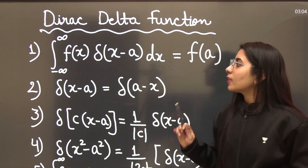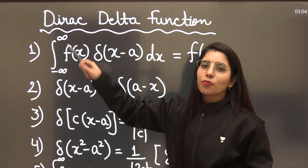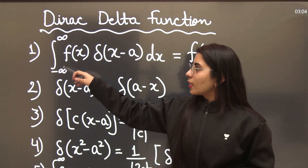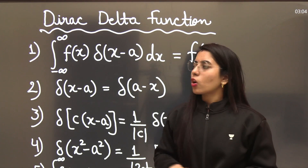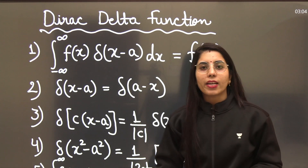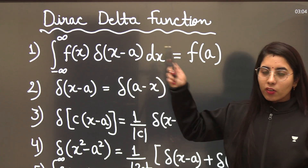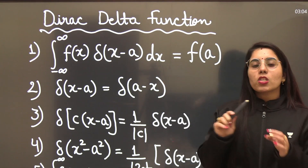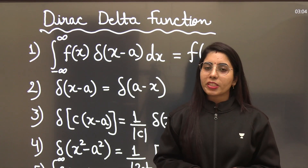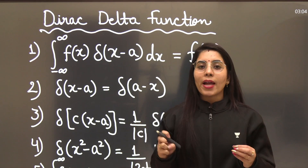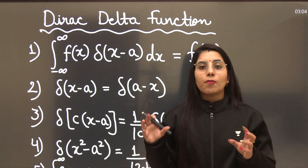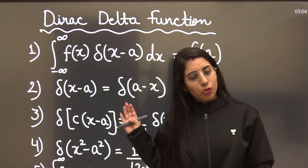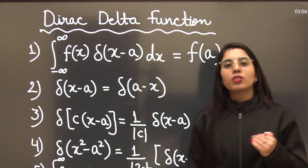But in case the range is not from minus infinity to plus infinity — if it is something like 1 to 3, 3 to 7, or minus 2 to 5 — and the value of x you get is not lying within that range, then you simply write the answer as 0. This is the first very important property, which will help you in quantum mechanics and other numericals wherever the Dirac delta function is present.